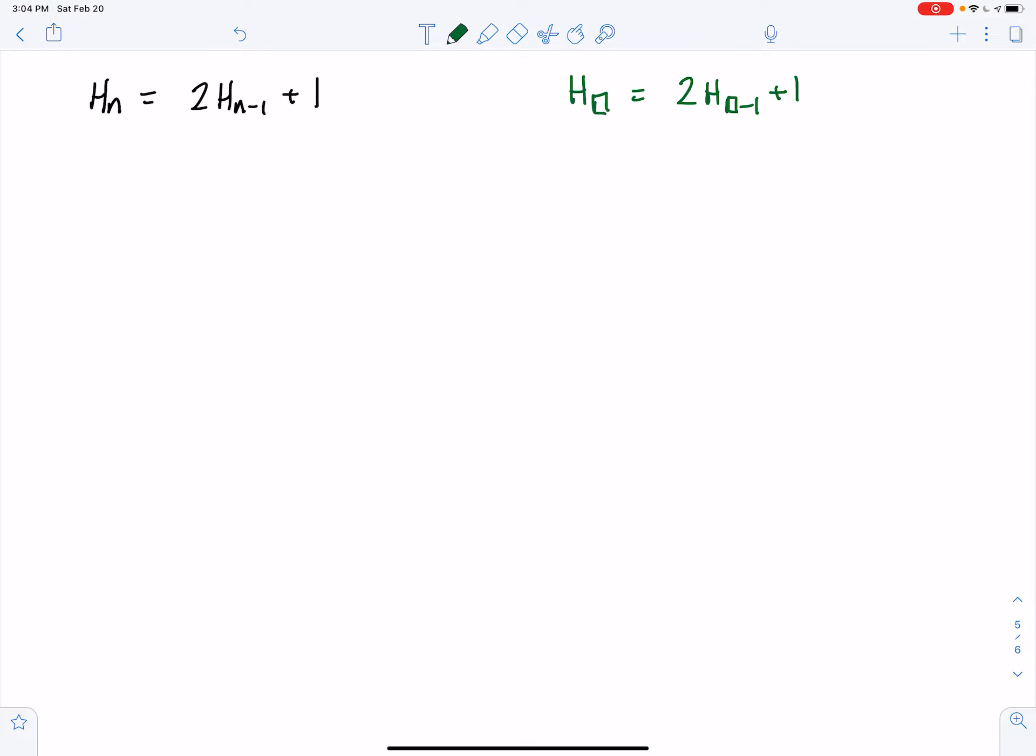Looking at this, h_n equals 2 times [h_{n-1}]. Now we're going to replace h_{n-1} with 2h_{n-2} plus 1.